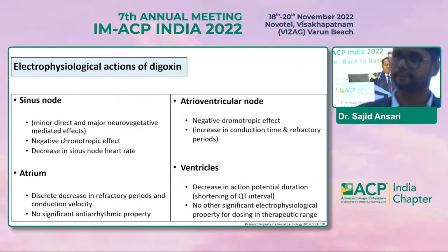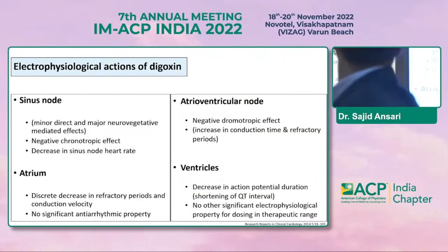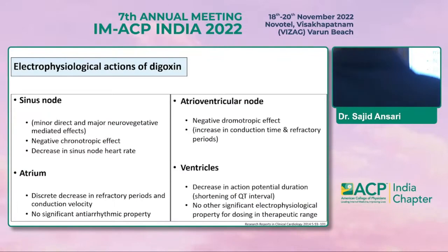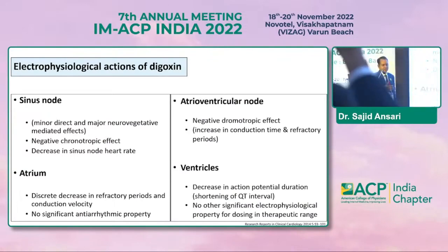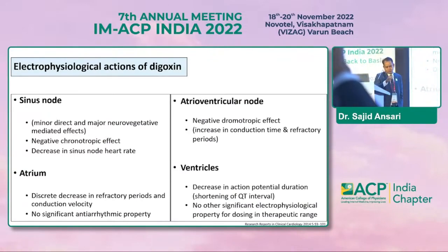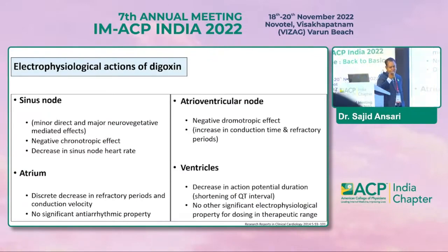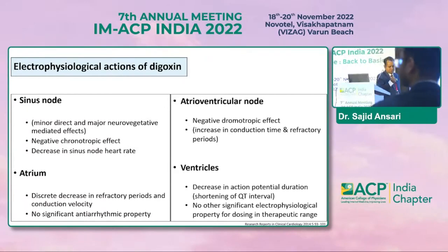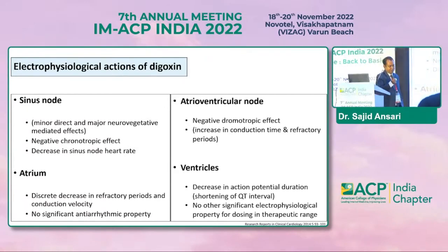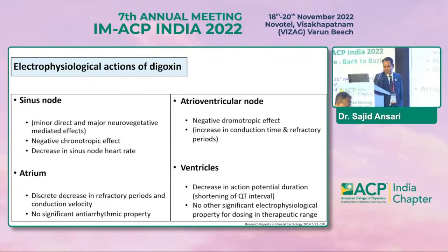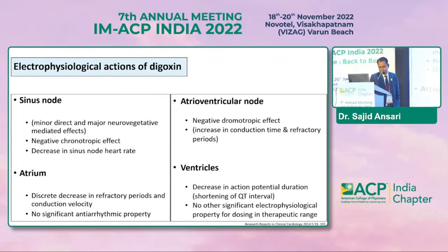There are various mechanisms of action — cardiac, extra-cardiac, and vascular smooth muscle cells. To summarize: digoxin has a positive inotropic effect, a negative chronotropic effect, and a negative dromotropic effect.